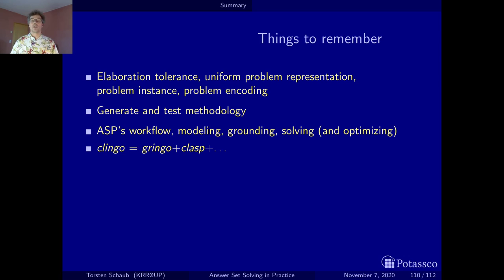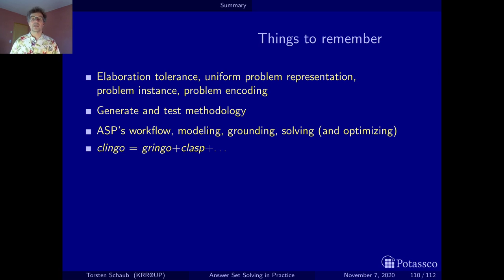Finally, once you push the button, how ASP's workflow goes: after you have modeled, there is a grounding phase, a solving phase, and that solving is sometimes iterated in case you are optimizing. And then, Clingo is an ASP system that is composed of a grounder and a solver, and these are called Gringo the grounder and Clasp the solver.